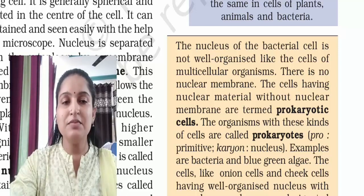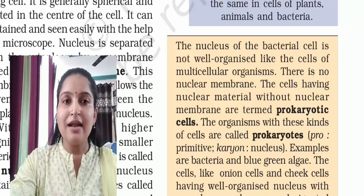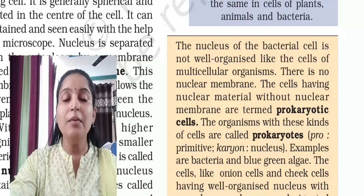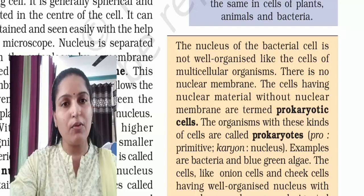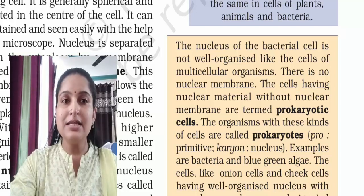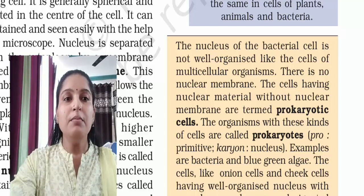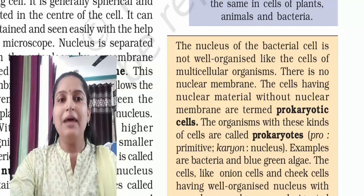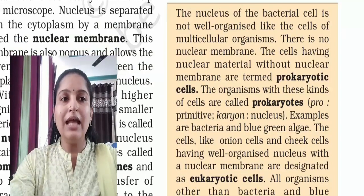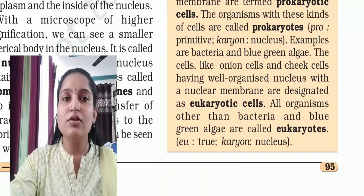Cells that have nuclear material without a nuclear membrane are termed prokaryotic cells. This is a very important term. Prokaryotic cells are cells which do not have a nuclear membrane. The organisms with these kinds of cells are called prokaryotes. 'Pro' means primitive and 'karyon' means nucleus. Examples are bacteria and blue-green algae.